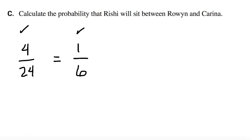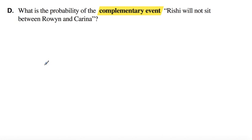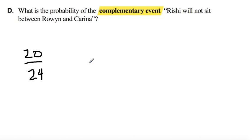Last question: what is the probability of the complementary event where Rishi will not sit between Rowan and Karina? There were twenty-four events total and four were favorable, which means there are twenty complementary events. That gives a five in six chance — one in six that it's favorable, which means five in six chance being complementary.